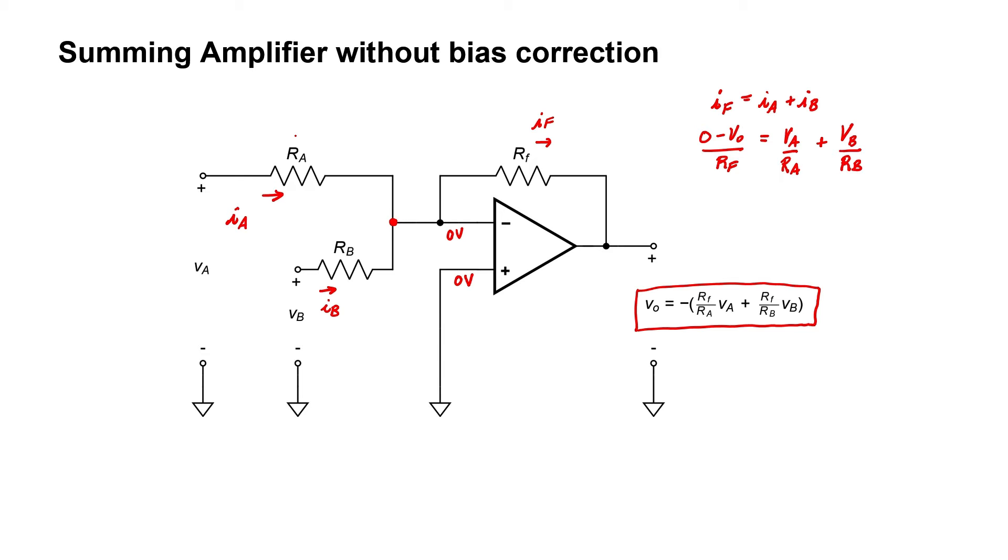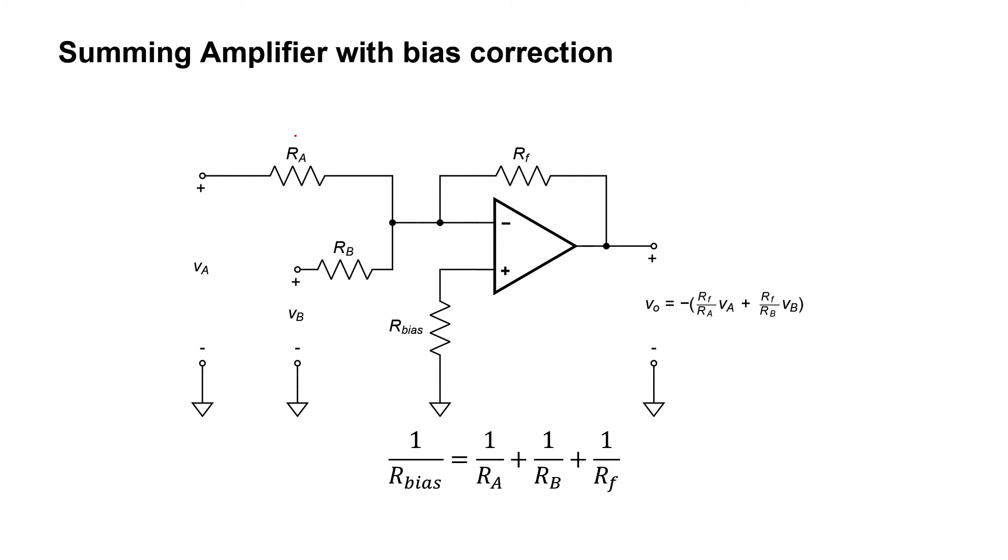I mentioned that this circuit doesn't have bias correction. So let's go ahead and add it in and make a slightly improved version of the summing amplifier. We're going to be including a bias resistor at the non-inverting input. The purpose of the bias resistor is to eliminate the effect of any I sub B on the calculation of the output voltage.